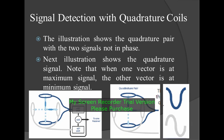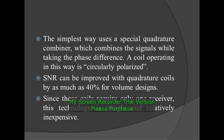Signal detection with quadrature coils: the illustration shows a quadrature pair with the two signals not in phase. Note that when one vector is at maximum signal, the other is at minimum signal. The simplest approach uses a special quadrature combiner which combines the signals while accounting for the phase difference. A coil operating in this way is called circularly polarized. SNR can be improved with quadrature coils by as much as 40% for volume designs. Since these coils require only one receiver, this technology is simple and relatively inexpensive.